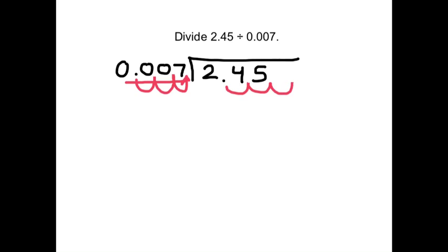And move this one 1, 2, 3 times to the right. And in this empty spot, put a 0. So we don't have to deal with these decimals anymore. Now we're just doing 7 goes into 2,450.